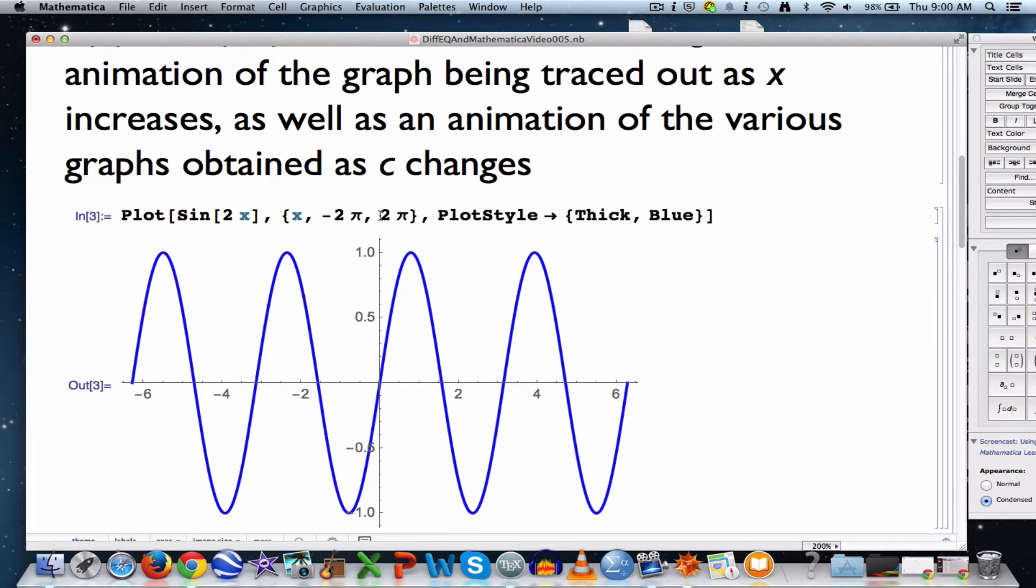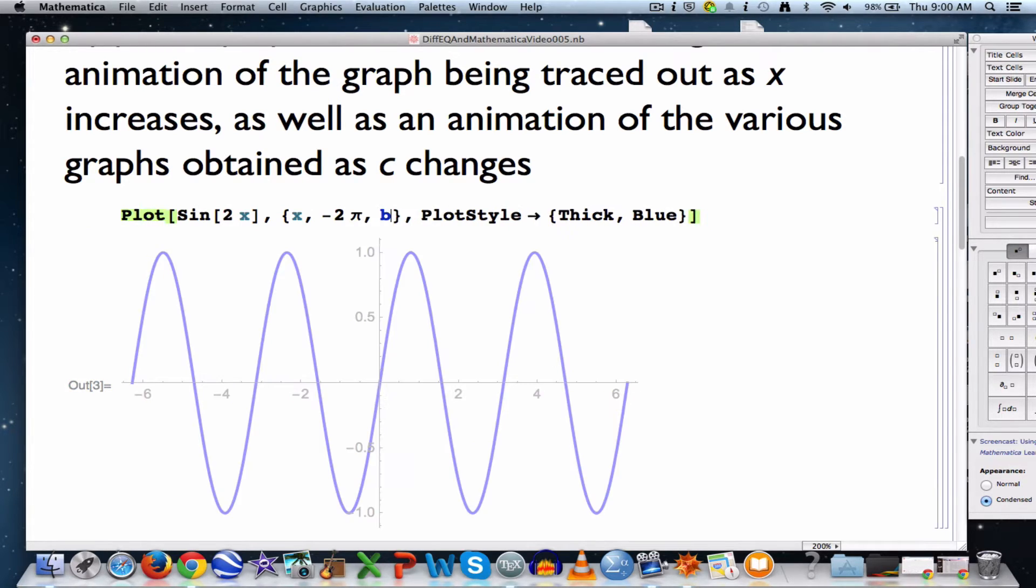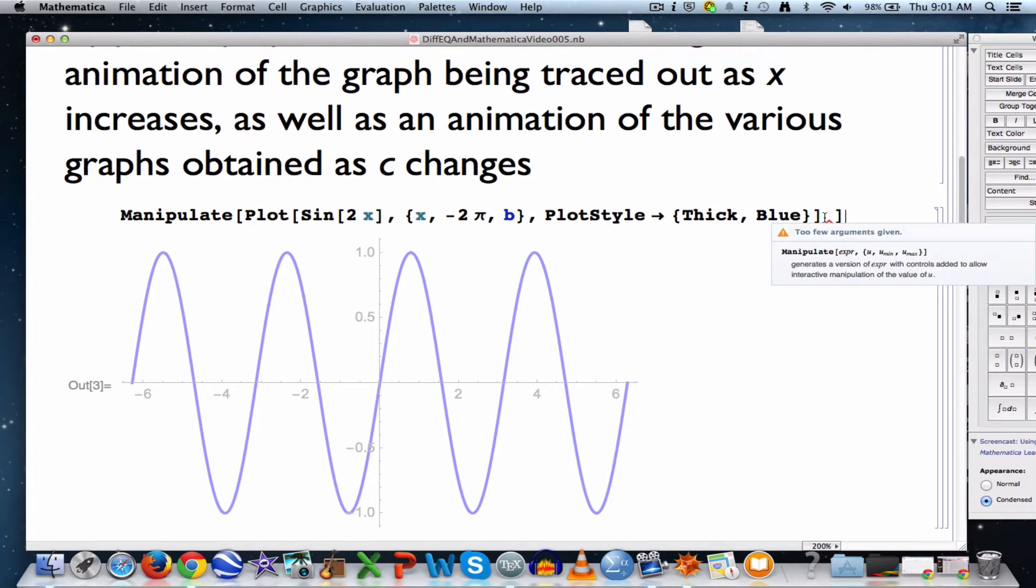To make an animation showing the graph being traced out as the right endpoint changes, I want to make the right endpoint an animation parameter. I'm going to call it d because d is a common letter for right endpoints. That's going to be an animation parameter. I'll put this entire code inside the first argument of the Manipulate function. I see a red arrow because I need a second argument to say what happens with that right endpoint d.